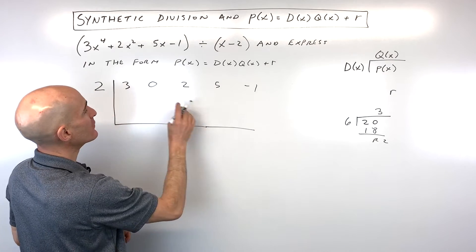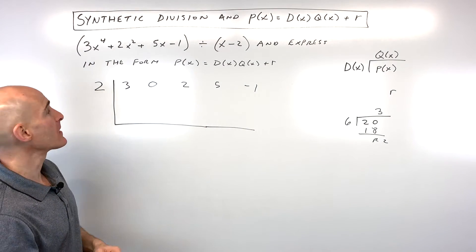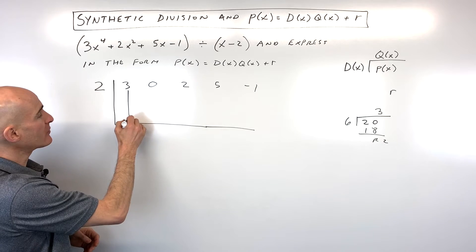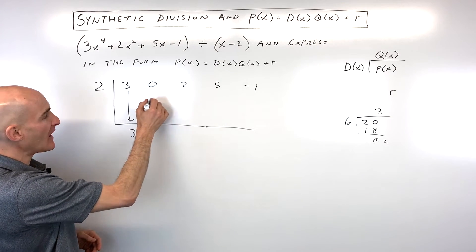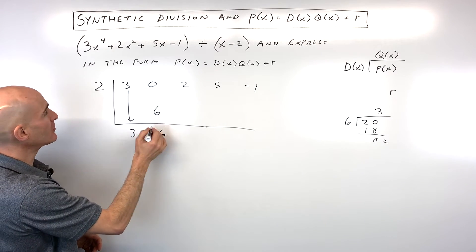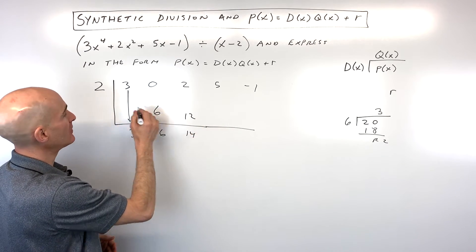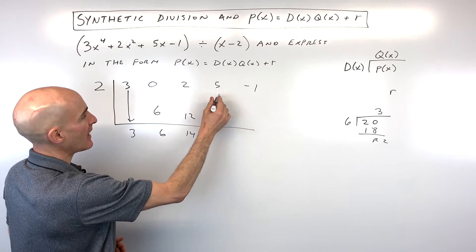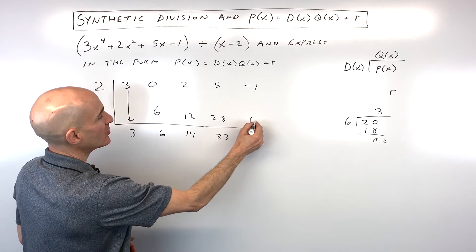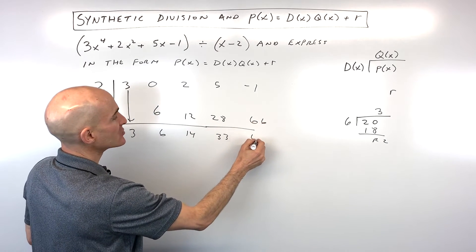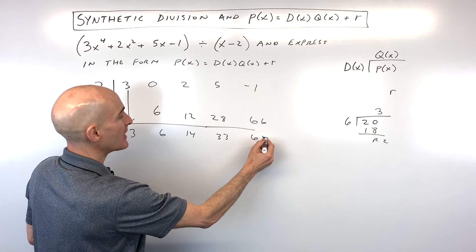I put a 0 in as a placeholder since we didn't have any x cubed terms. I'm going to bring down the 3, multiply in the diagonal, add straight down, multiply in the diagonal, add straight down, multiply in the diagonal, add straight down, multiply in the diagonal, add straight down. This last number, 65, is our remainder.